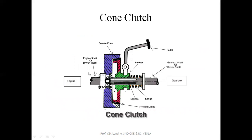This is the schematic diagram of the cone clutch. This shaft coming from the engine is called the engine shaft or the driving shaft. To this engine shaft, the female cone is attached. The spline shaft going to the gearbox is the driven shaft, and on it sits the male cone, which has friction lining material provided on its conical surface.